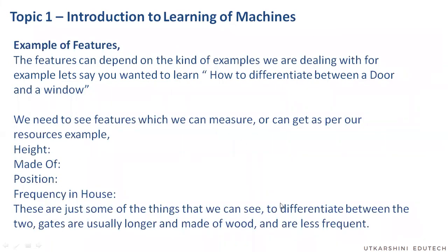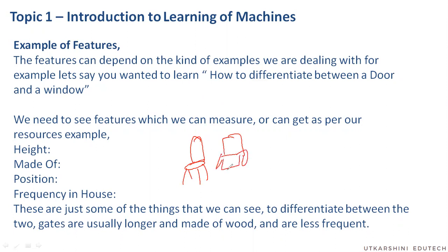That is the particular thing we need to remember. Features actually depend on the example we are talking about. For example, if I want to differentiate between a plastic chair and a steel chair, it's a bit hard because they both have four legs and can have any shape. So what I'll look at is the material.